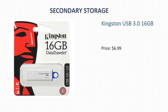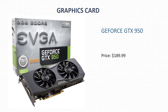For secondary storage, I chose the Kingston USB 3.0 16GB because it's enough to maintain accessory documents and files for later use. For the graphics card, I chose the GTX 950 because it's based on the Maxwell microprocessor architecture with the advantage of power savings while still ensuring performance. Its price is $189.